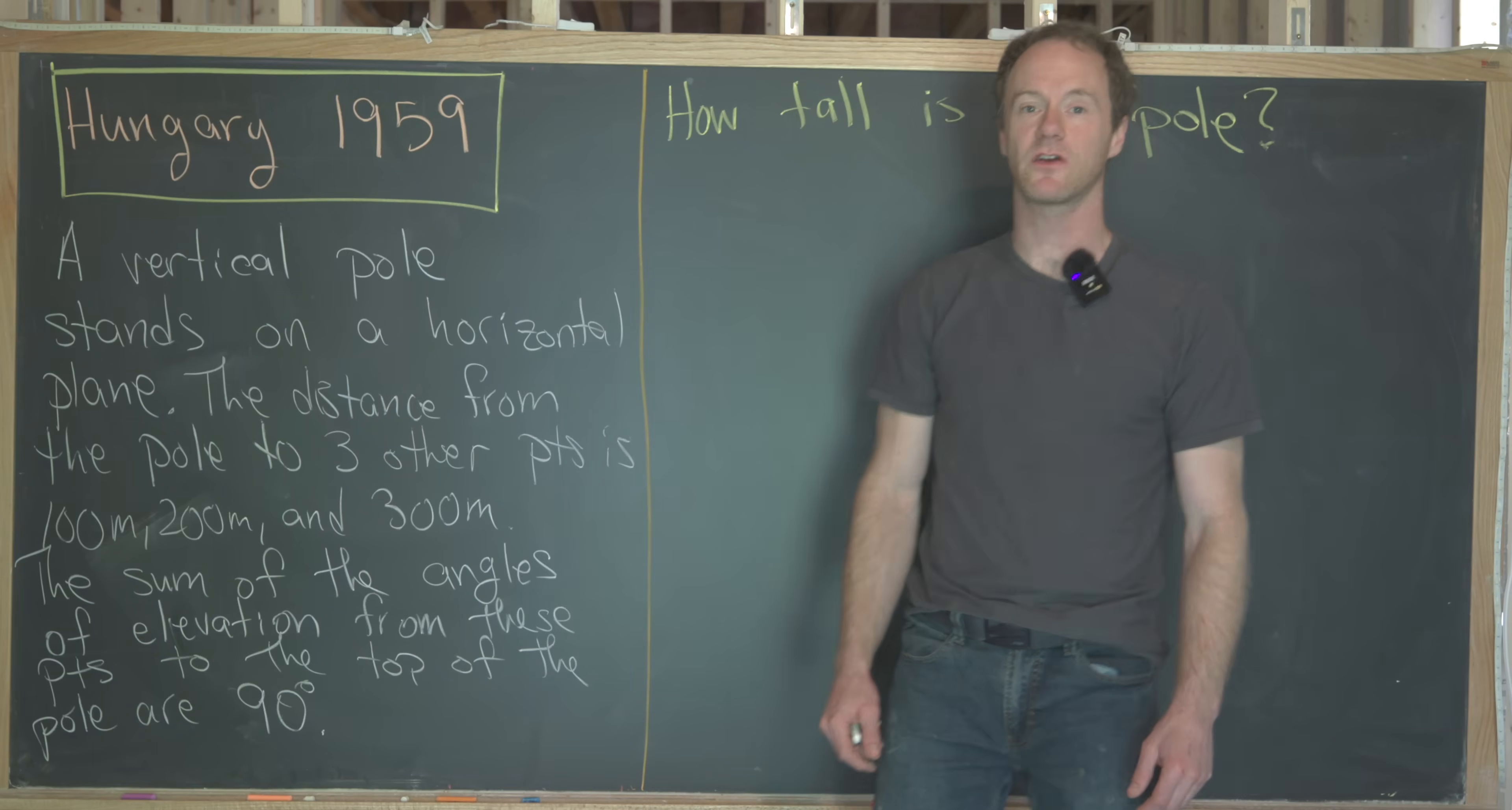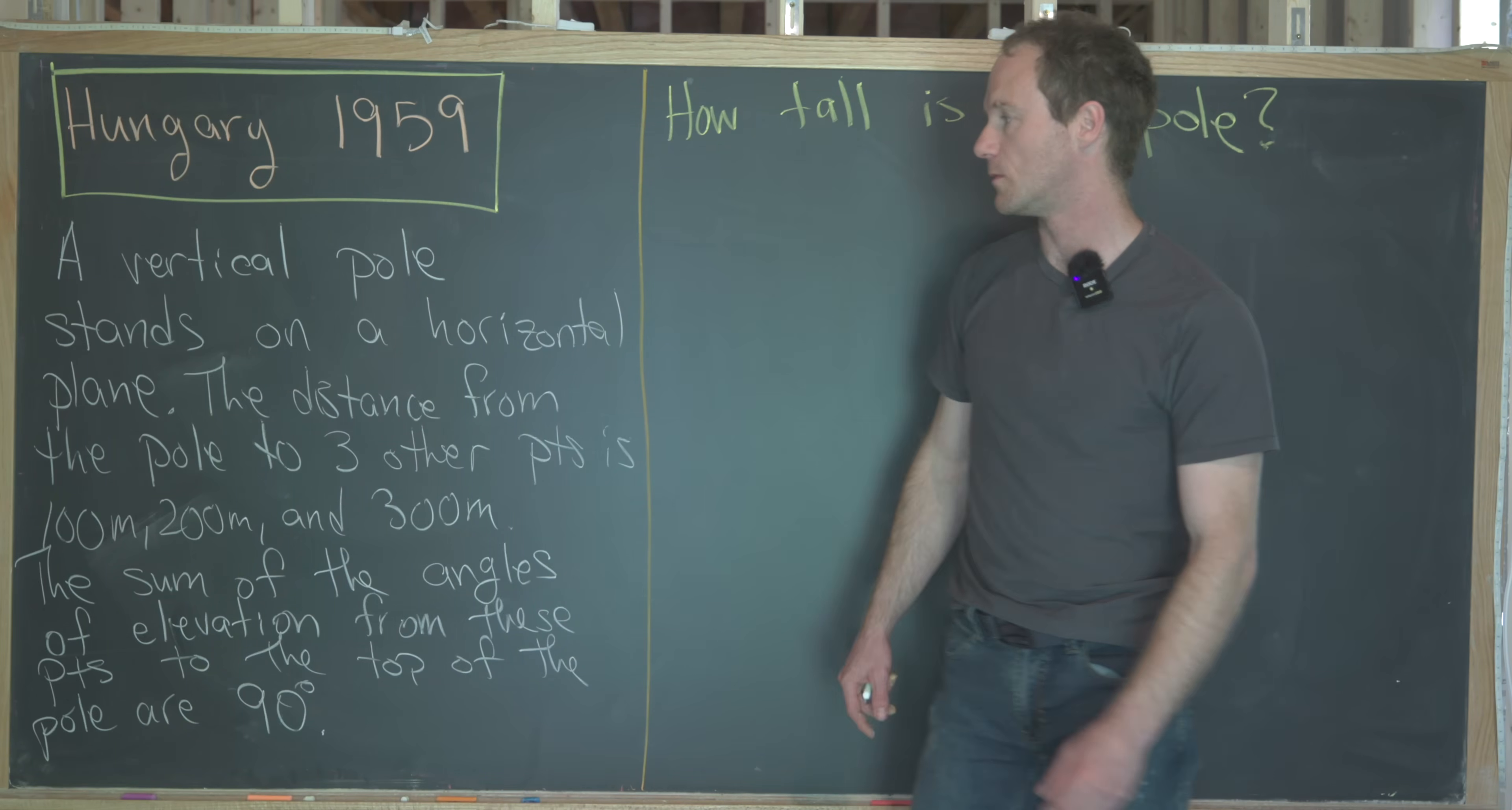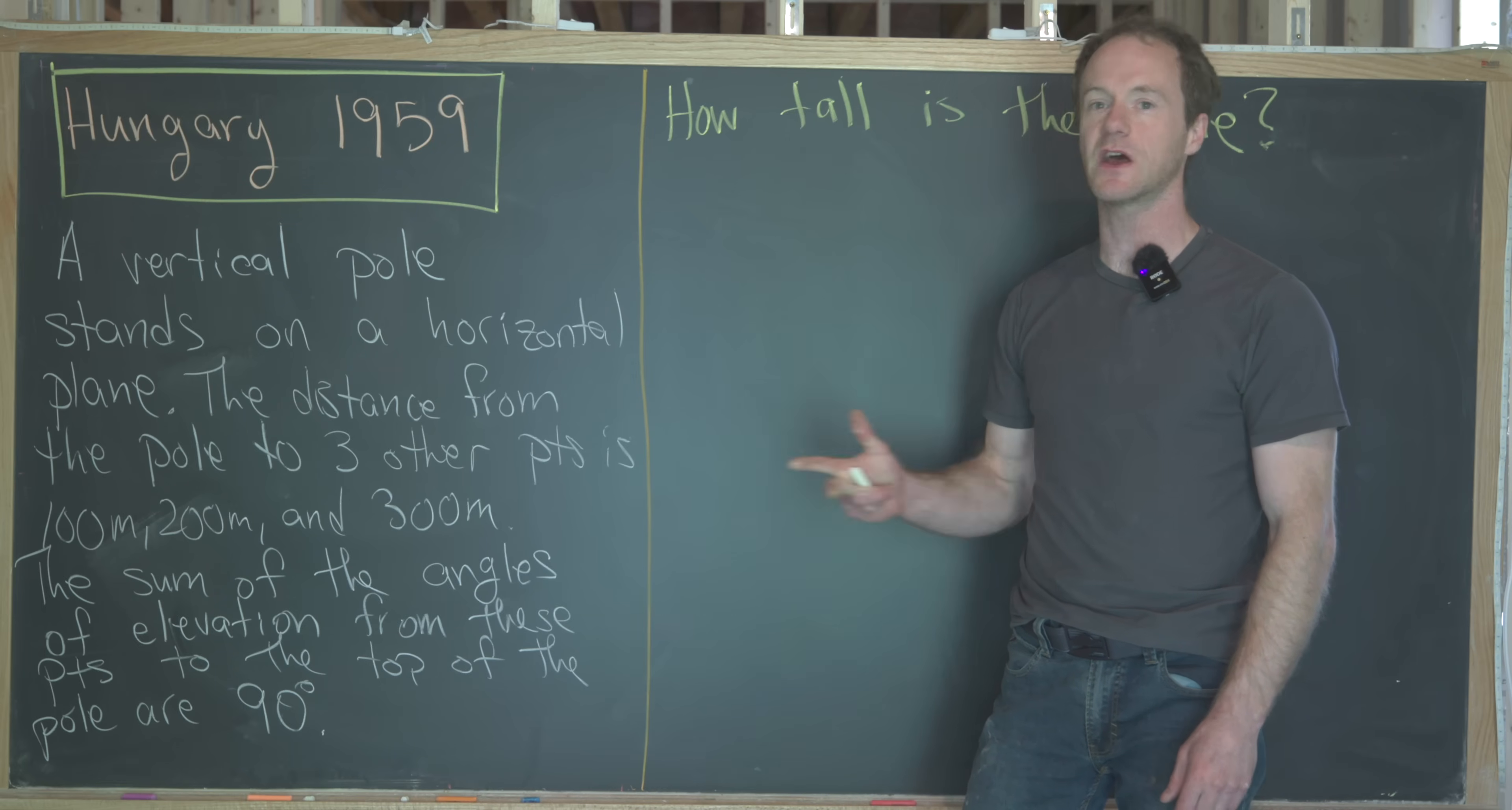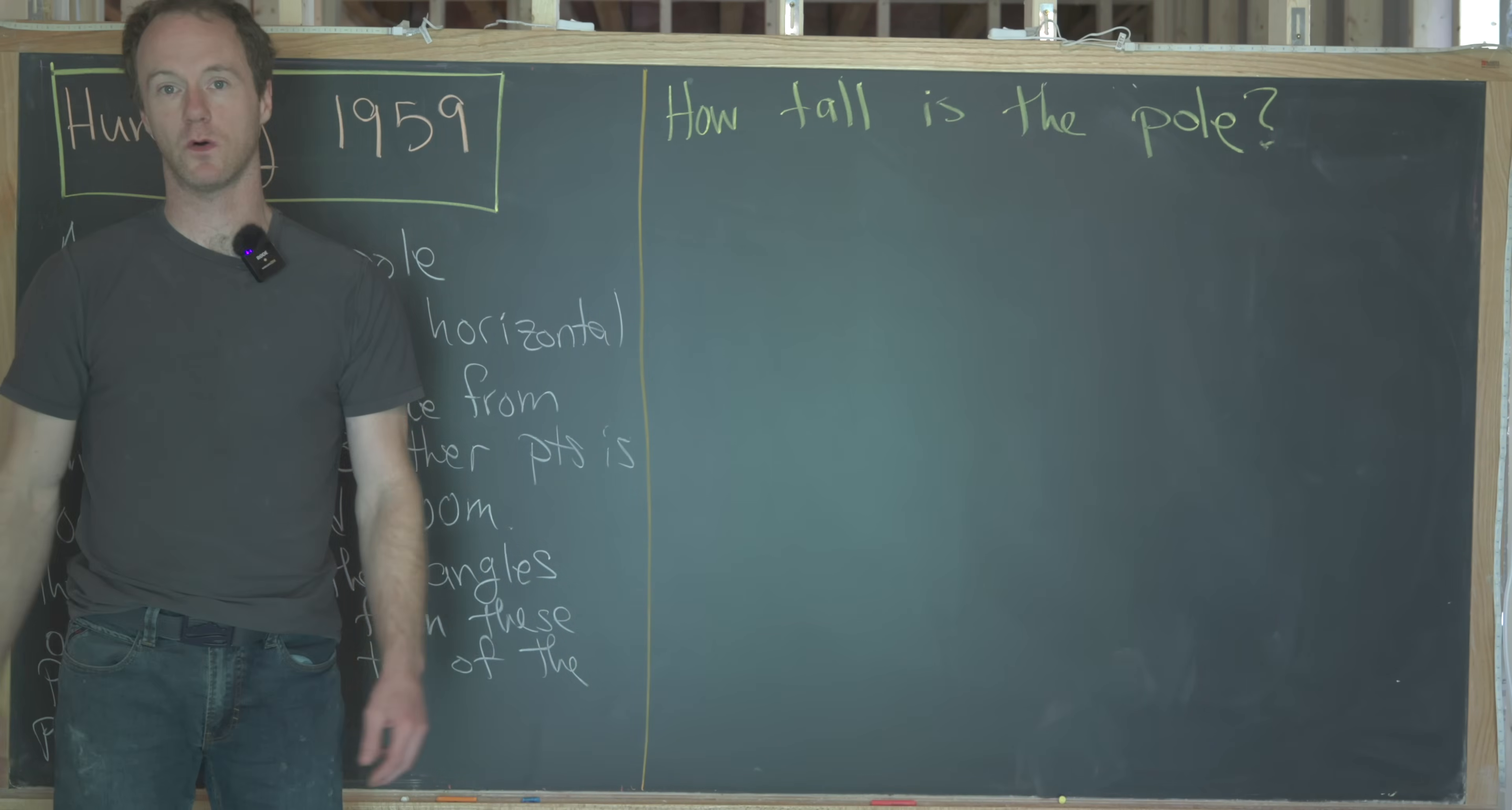Here we're going to look at a nice problem from a Hungarian math contest from 1959. So the setup goes like this. We have a vertical pole standing in a horizontal plane, and the distance from the base of this pole to three other points is 100, 200, and 300 meters respectively. Furthermore, we know that the sum of the angles of elevation from these points to the top of the pole is 90 degrees, and our goal is to find how tall is this pole.